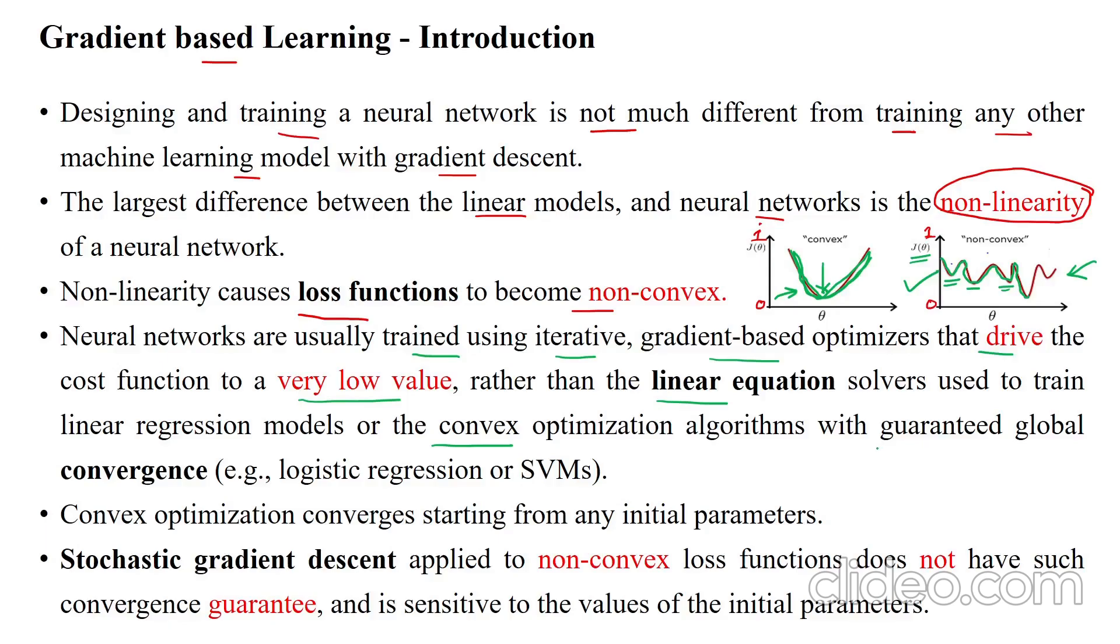Convex optimization converges starting from any initial parameters. The converging point is guaranteed in linear models. But in the neural network there is no guarantee to reach the global minimum. That is the main difference between the linear and non-linear activation functions based upon the cost functions.